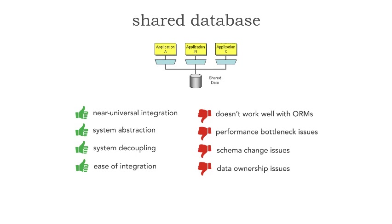The second problem is the performance bottleneck issues with a shared database. The more applications that are connected to that data, the more that database is going to get stressed out. A database is nothing more than a piece of software — it usually sits on bare metal and requires threads, memory, and CPU like any other software. The more stress you put on that database, the more resources it consumes, and it can become a performance bottleneck.